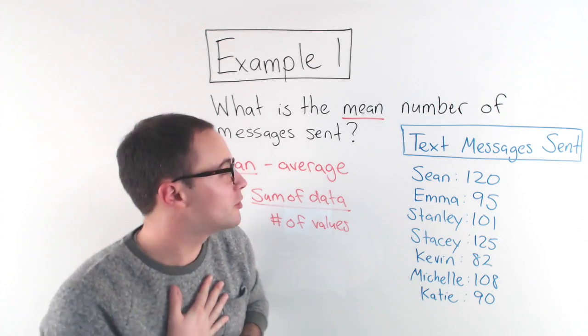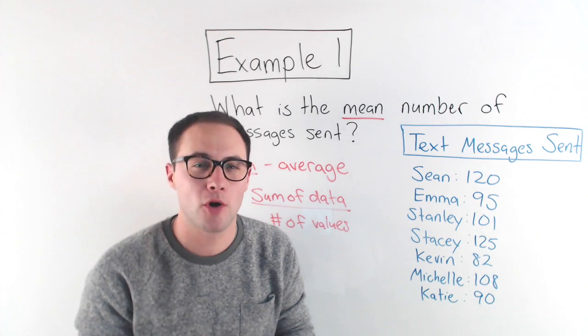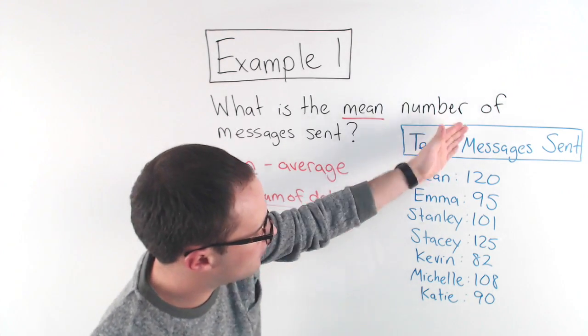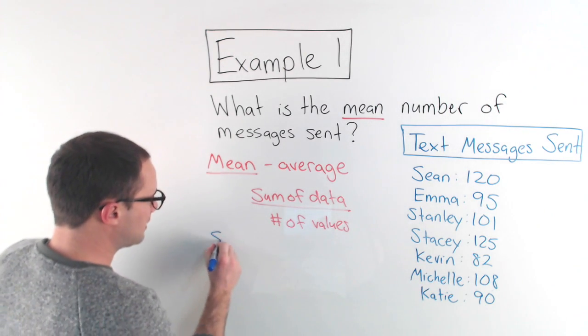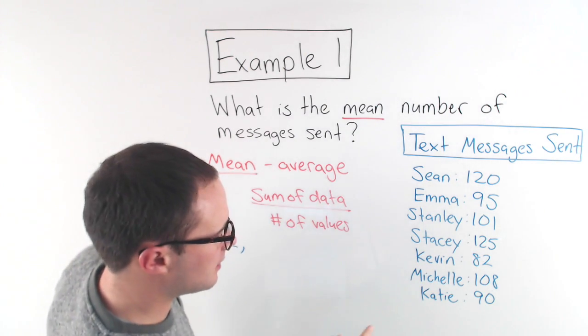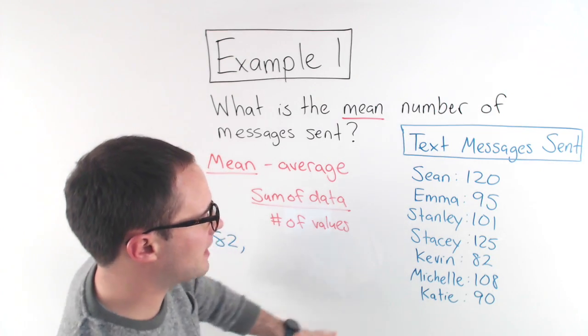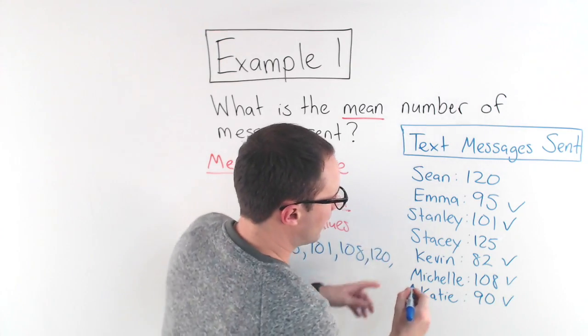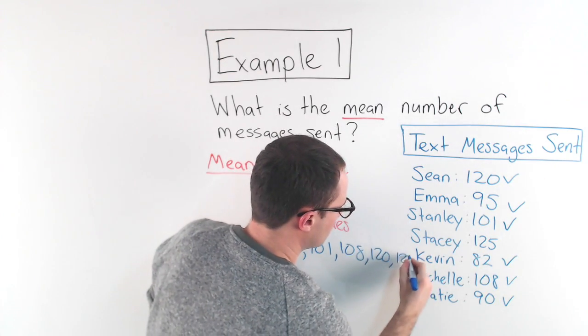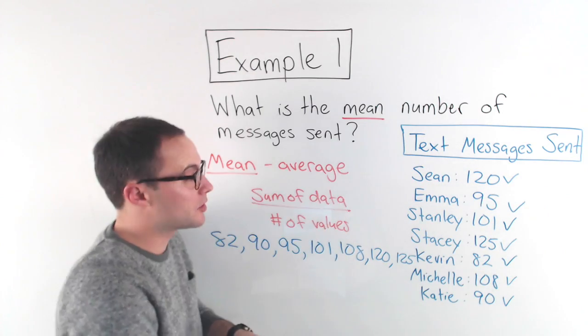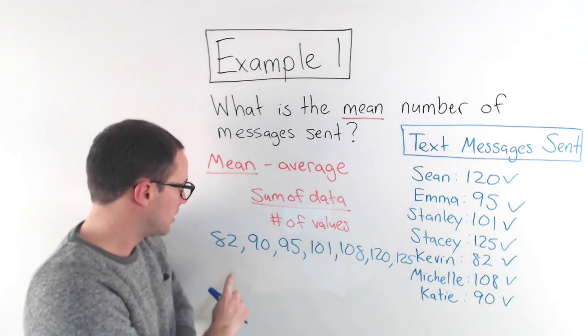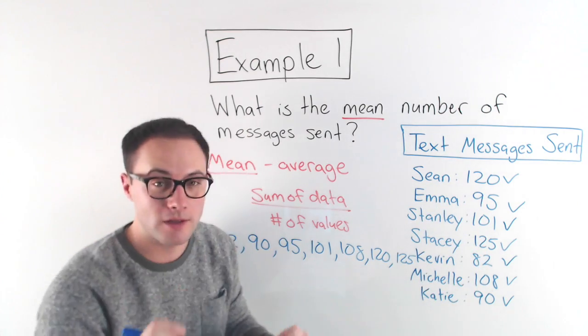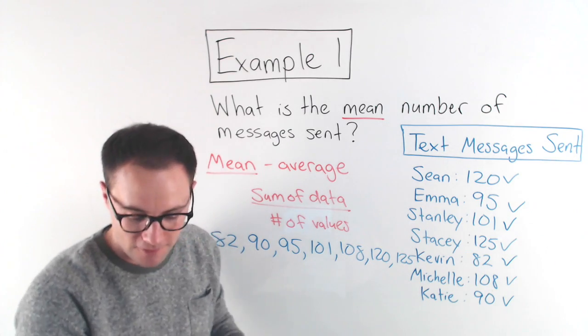First thing, what I like to do, it's a good thing when you're doing things like mean, median, and mode, the very first step is to put all the data in order. So if I'm looking from least to greatest, 82 is my least, then we've got 90, and finally 125. Just double check, I've got 1, 2, 3, 4, 5, 6, 7. Perfect. So I got them all, they're in order. That's the first step.